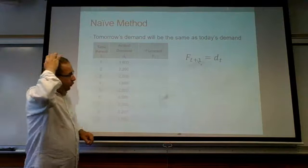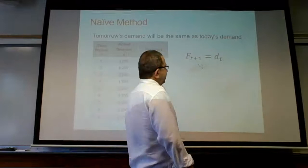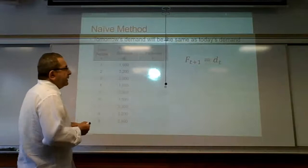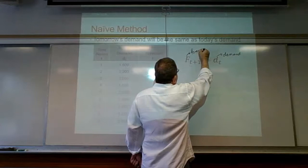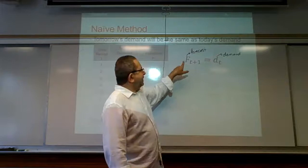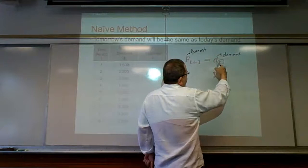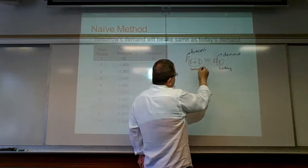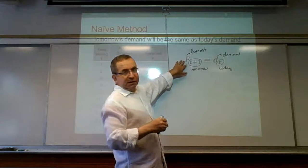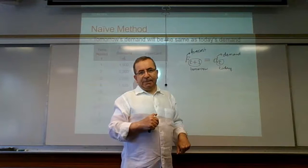The formula for the Naive method — let me explain this in more detail. D stands for demand and F stands for forecast. The subscripts are time periods. T would be today or the current period, and T plus 1 would be tomorrow. So what this formula says is: tomorrow's forecast equals today's demand.